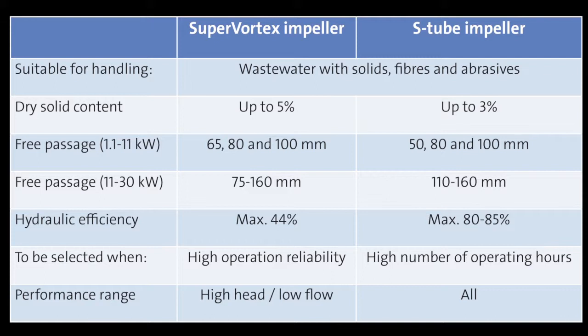Here we have an overview comparing the two impeller types. The conclusion is that you should choose the super vortex impeller when you have a high dry solid content in the wastewater and require high operational reliability. The S-tube impeller you should choose when both non-clogging capabilities and high efficiency are of importance.